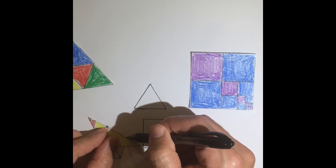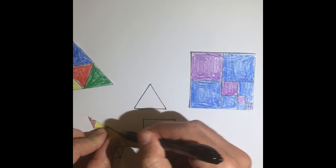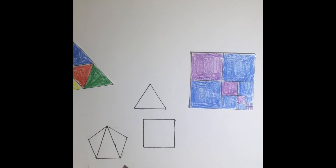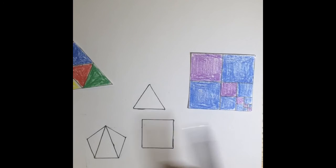And the fifth side. And that's a regular pentagon. So I have an equilateral triangle, a square, and a regular pentagon that are now a size down from where I started.